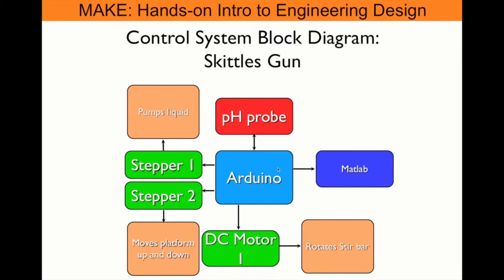When you turn the machine on, the Arduino will initially send the signal to stepper motor 2, which will actuate the platform up and down.